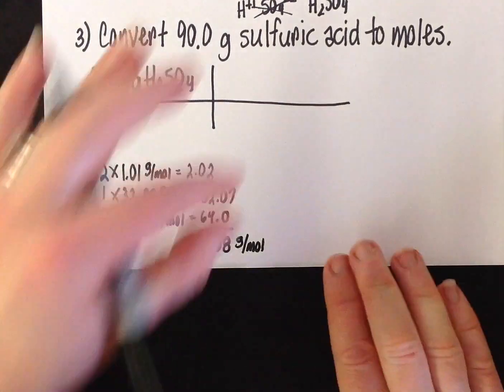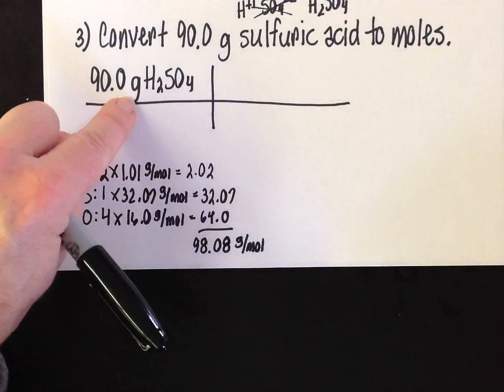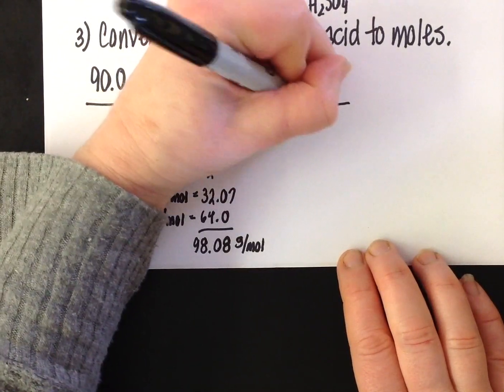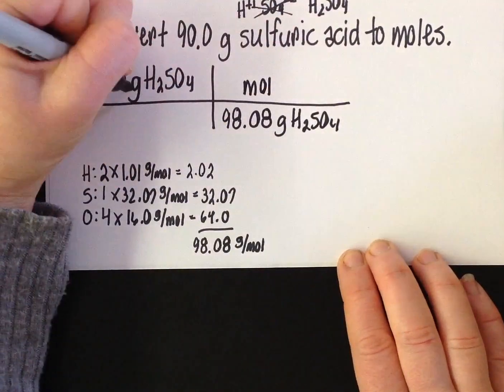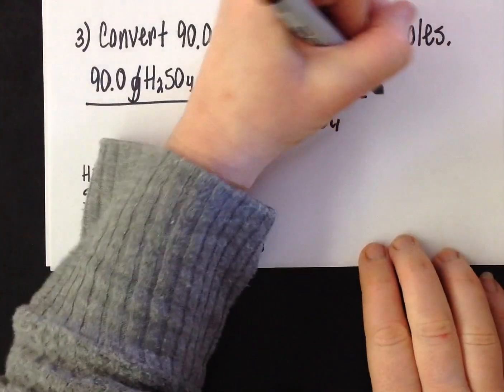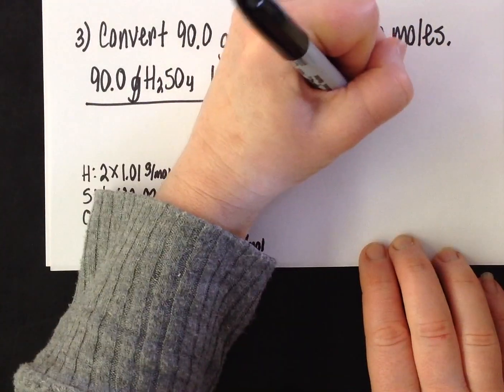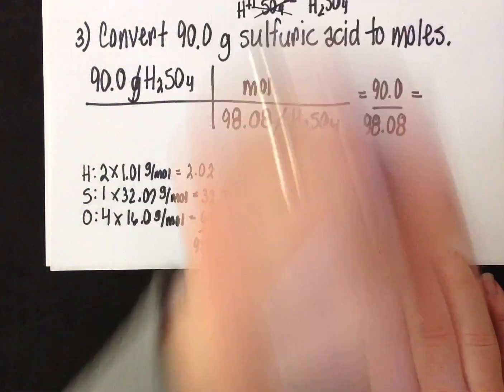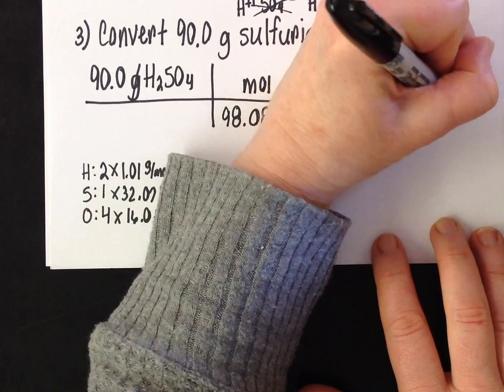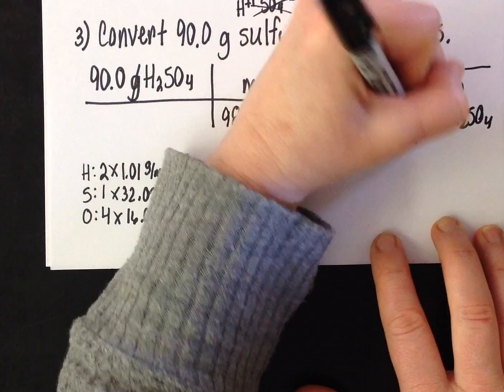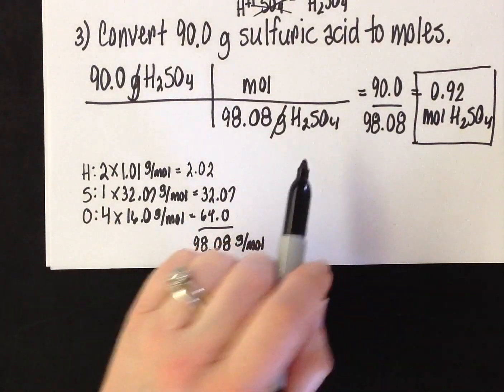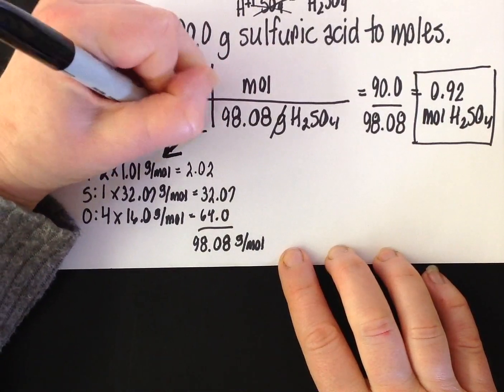I'm going to plug in right here. Again, gram has to be on the bottom. How do I know that? Because it was on the top in the previous step. So 98.08 grams of sulfuric acid per mole. Grams cancel. I've got mole on top—that's kind of like my stop sign. That's what they asked me for. I've got moles of H2SO4 on top, so I'm ready to calculate. I'm going to divide 90.0 by 98.08, and when I divide those two numbers, I'm going to get 0.92 moles of H2SO4. The only difference between this problem and the first two problems was that I just couldn't easily look at the periodic table and get that mass. I had to do a little extra work and find that mass on my own.